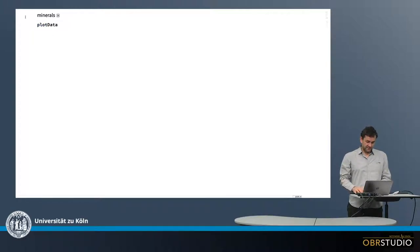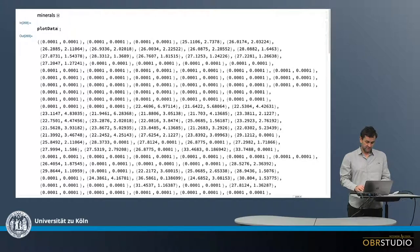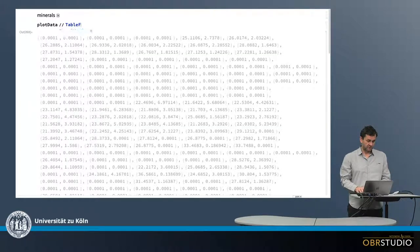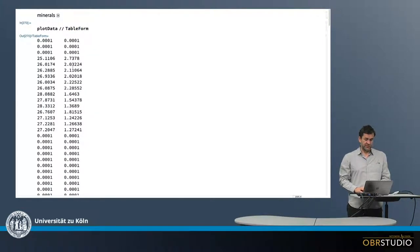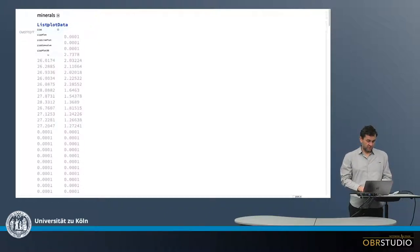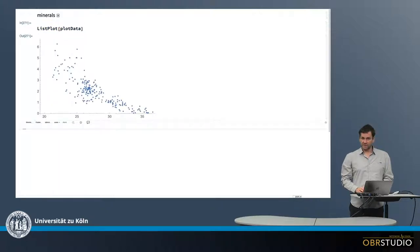So I prepared some data here, which look like this, or in table form, look like this. You can see there are two columns of data and we can plot these against each other. This is magnesium, this is silicon, so we can plot magnesium versus silicon here. This is what I'm doing now, making a list plot of these two, which looks like this.